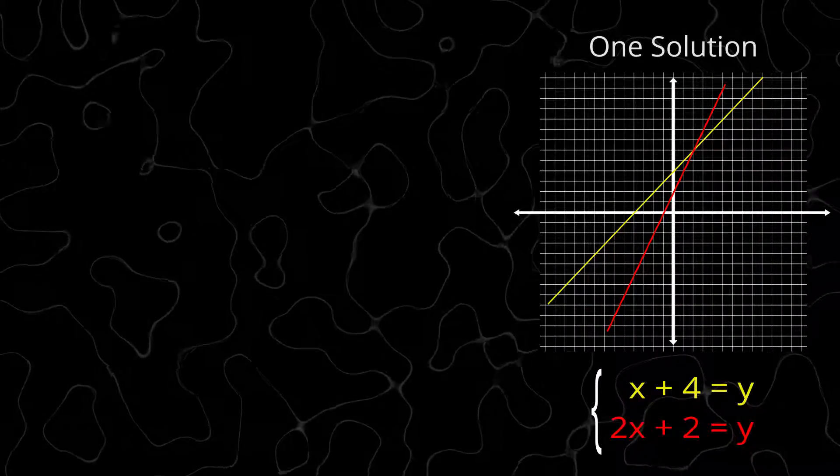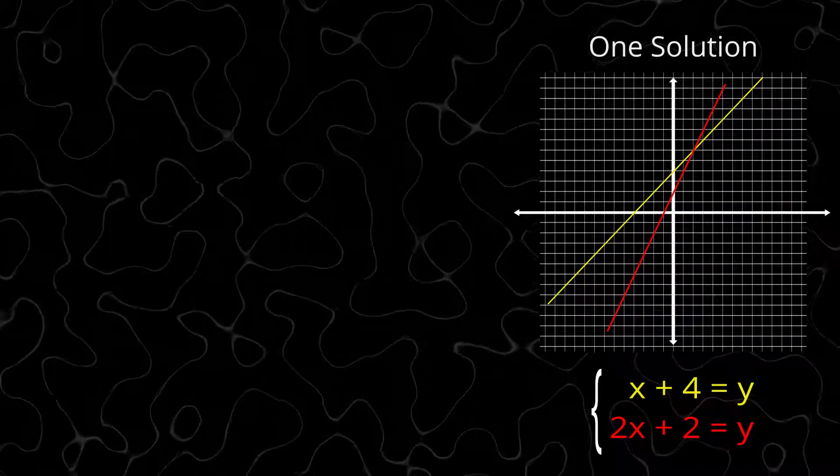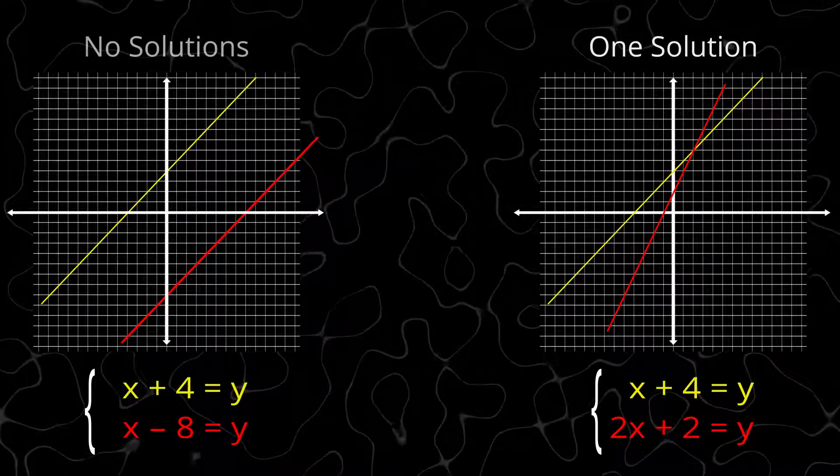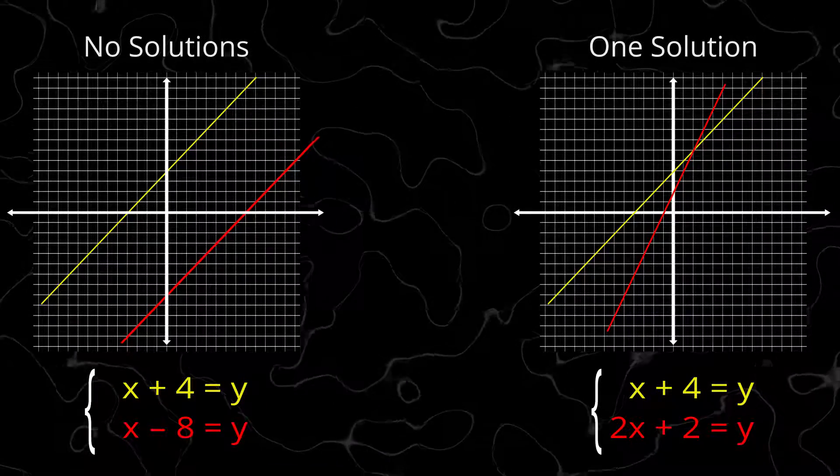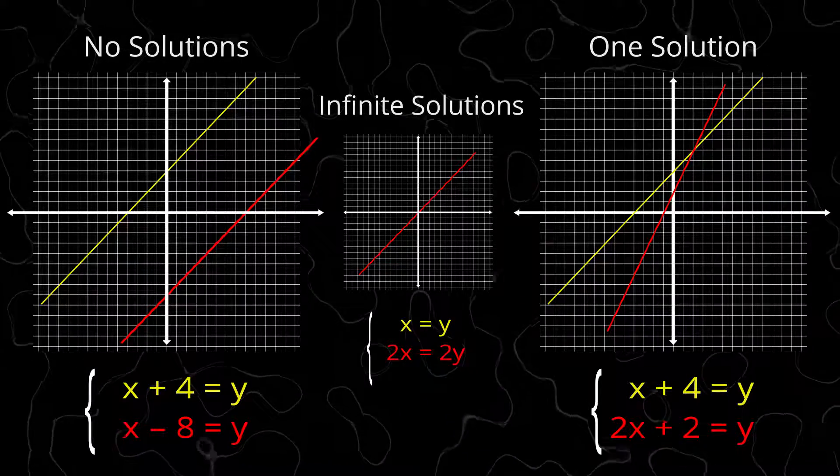A system of linear equations can have one solution, where the lines cross at one point; no solutions, where the lines are different but parallel; and an infinite number of solutions, where two or more lines are really the same line.